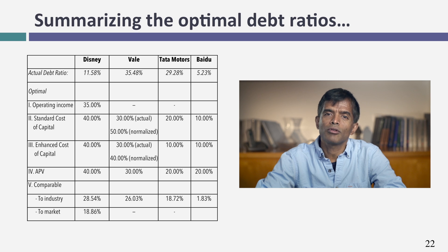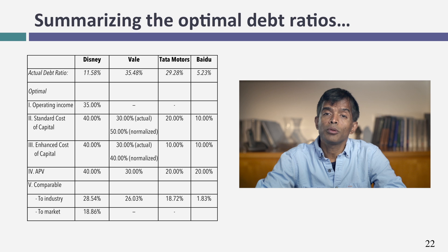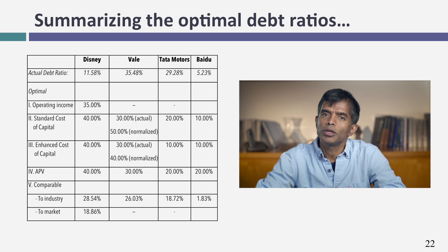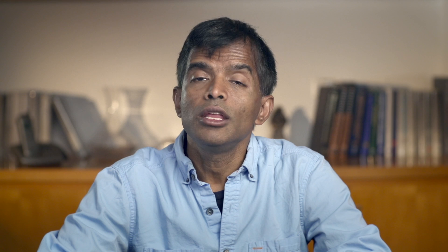Pulling these numbers together: with Disney, the cost of capital approach gives a 40% optimal, constrained rating gives slightly lower, APV also gives 40%, while sector average and market regression give lower estimates around 19%. But overall, the conclusion is the same across all approaches — Disney is under-levered. Tata Motors looks over-levered on every prediction. There is no magic bullet or one approach that works every single time. Try the different approaches and make your best judgment on the right mix of debt and equity for your company.